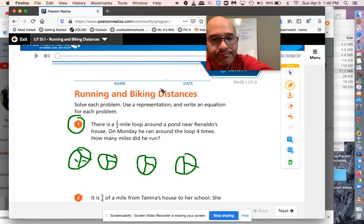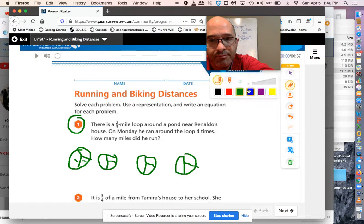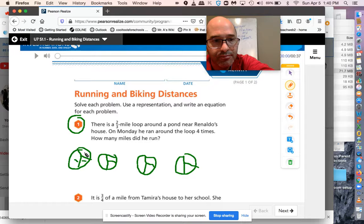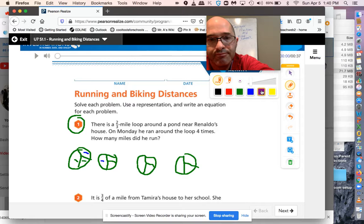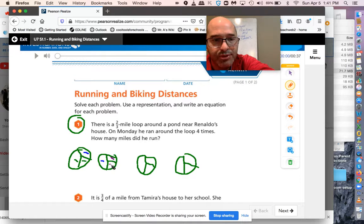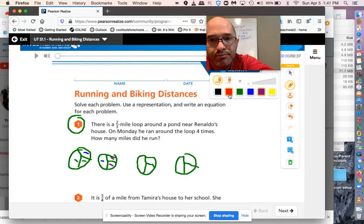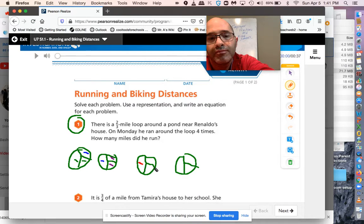Two-thirds once. Two-thirds twice. Two-thirds three times. Two-thirds four times. Which gives us one, two, two, and two-thirds.